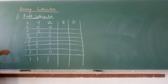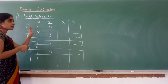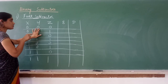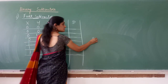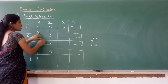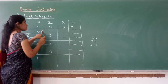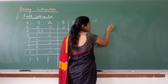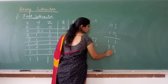Now filling in the truth table using normal subtraction. For x=0,y=0,z=0: 0 minus 0 minus 0 equals 0, so difference=0, borrow=0. For x=0,y=0,z=1: 0 minus 0 is 0, then 0 minus 1 is minus 1. Minus 1 in binary is 11, so difference=1, borrow=1.